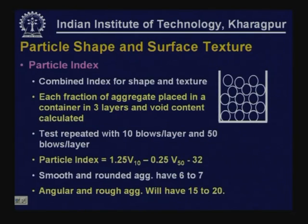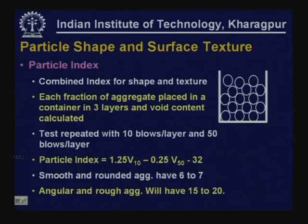Particle index is a combined index representing both shape and texture. Each aggregate fraction is placed in a container in three layers and void content is calculated: once compacted with 10 blows and once with 50 blows. Particle index = 1.25 × (void ratio at 10 blows) − 0.25 × (void ratio at 50 blows) − 32. Smooth and rounded aggregates typically have a particle index of 6–7, while angular and rough aggregates have 15–20.